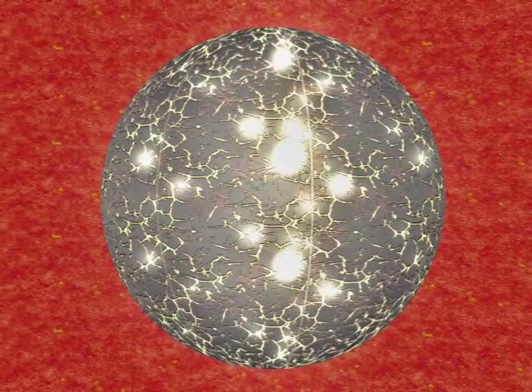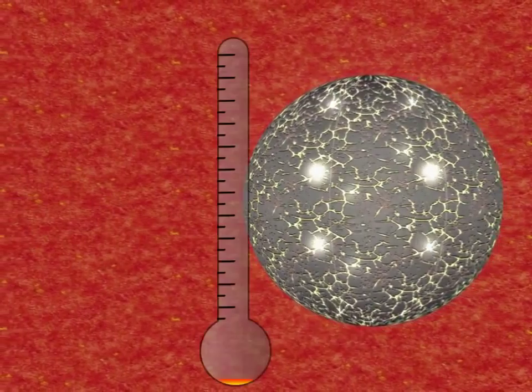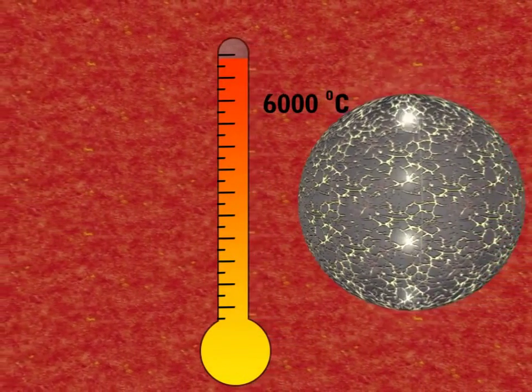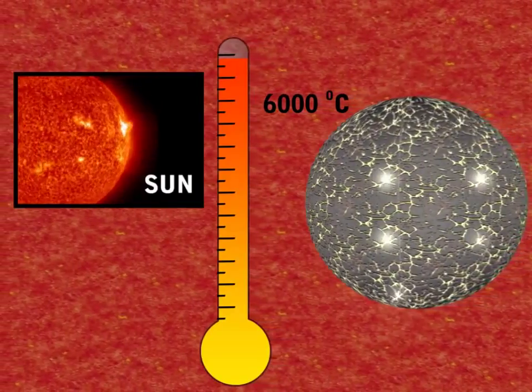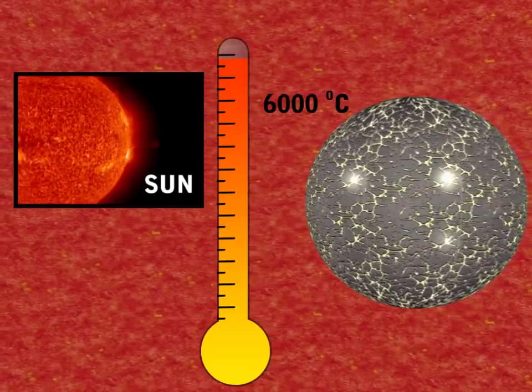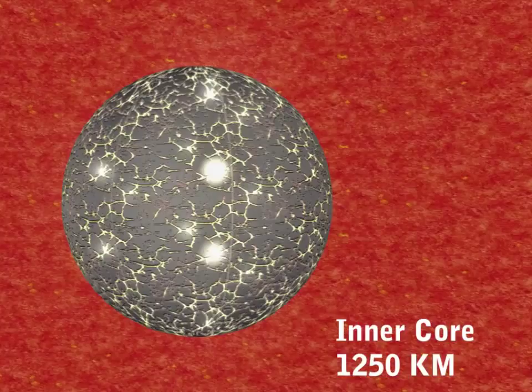We now come to the innermost layer of the earth, the inner core. The inner core has a temperature of around 6,000 degrees Celsius. This is nearly the temperature of the sun's surface. The inner core has a depth of 1,250 kilometers.